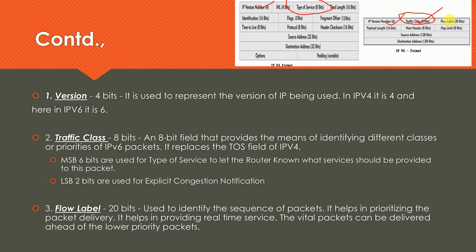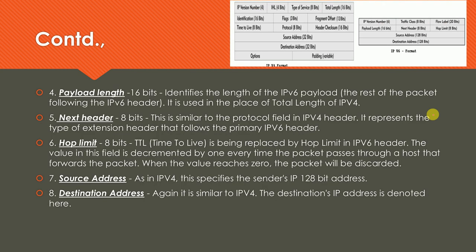The next important field is the Flow Label, which carries 20 bits. It is used to identify the packet sequence — tracking whether packets are arriving in order — and also helps in delivering packets that have higher priority, ensuring that higher-priority packets can be sent earlier. Next is Payload Length, which is 16 bits — it indicates the length of the payload in the packet.